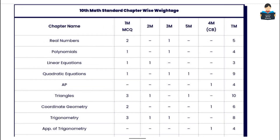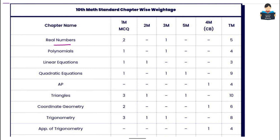The first chapter is Real Numbers. There are 2 MCQ questions. Key topics include proving that root 2 is irrational, 3 plus root 2 is irrational, and 5 plus root 3 is irrational. So in this chapter, prove-irrational sums are very important.